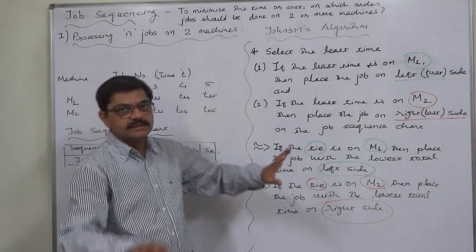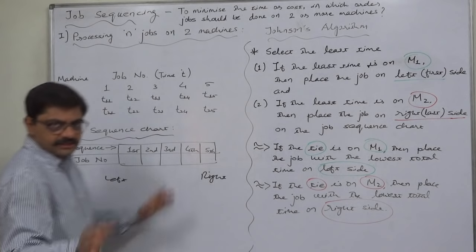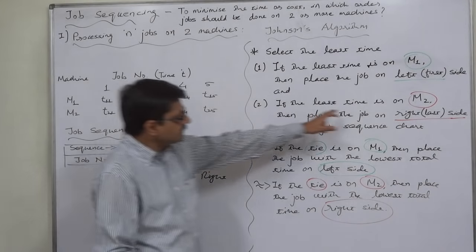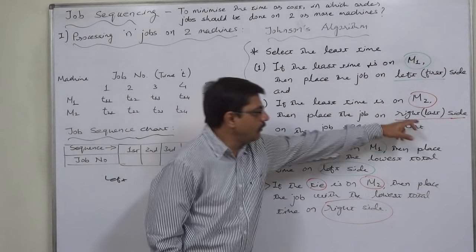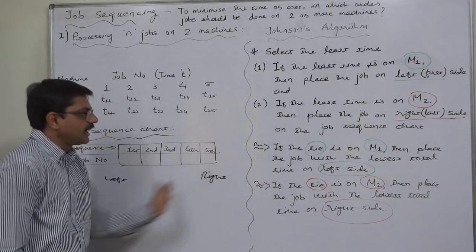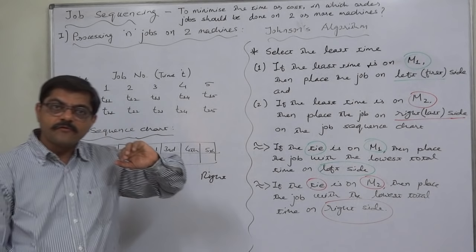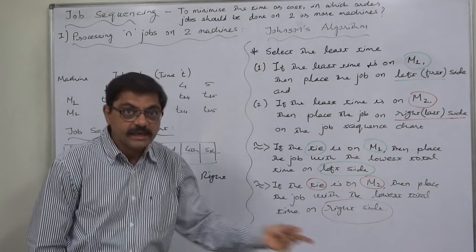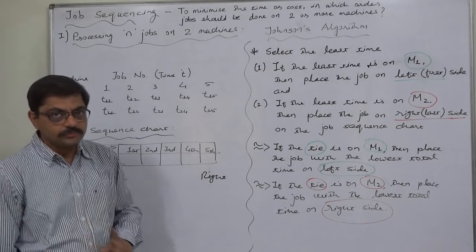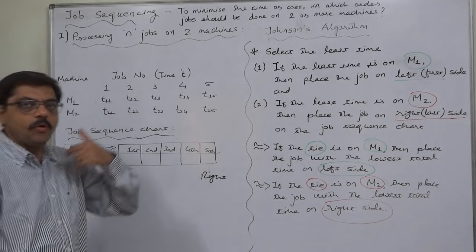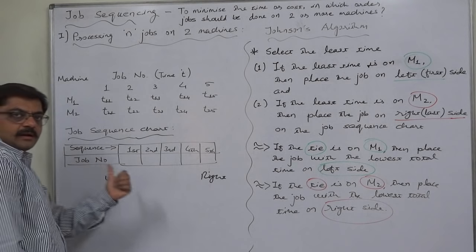Another possibility is that the least time is on M2, machine two. Then place the job on the right hand side of the job sequencing chart — meaning we are going to perform that job at a later stage. If the lowest time among all incomplete jobs is on machine one, then it is placed at an earlier stage in our preference order.